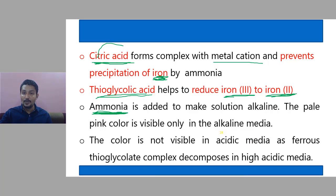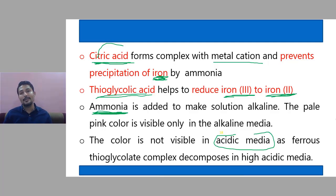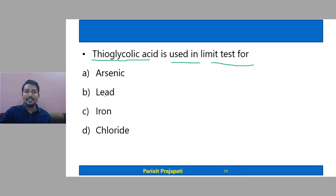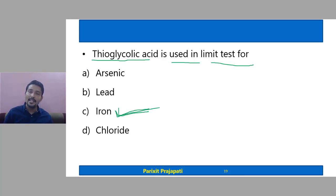Alkaline media is necessary because in acidic media, the ferrous thioglycolate complex is decomposed. These are the roles of each reagent in the limit test of iron. A common exam question: thioglycolic acid is used in the limit test for which — arsenic, lead, iron, or chloride? The correct answer is iron. You may also be asked: what is the role of thioglycolic acid in the limit test of iron?